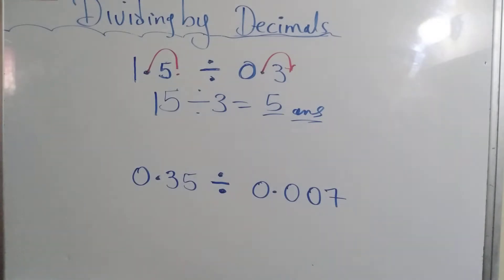Let's look at this one now. This one is a little bit more complex. So it's 0.35 divided by 0.007. Most naturally, this is a smaller decimal. So you expect to get a bigger number, right?